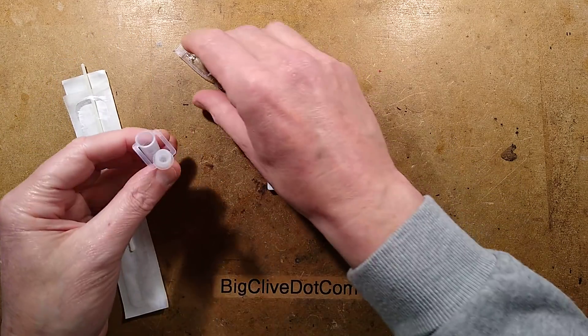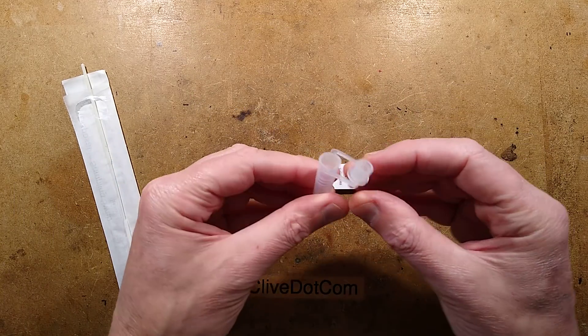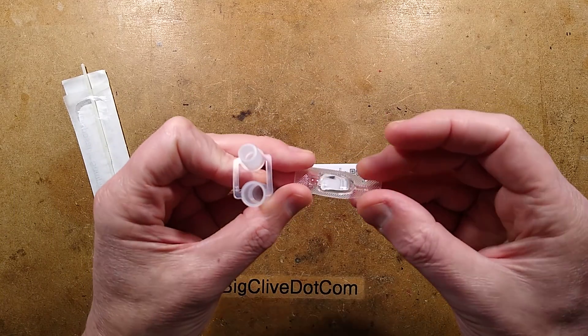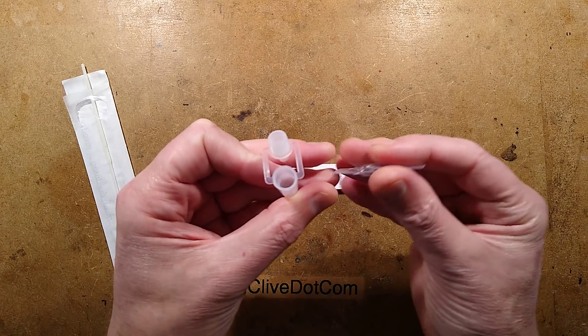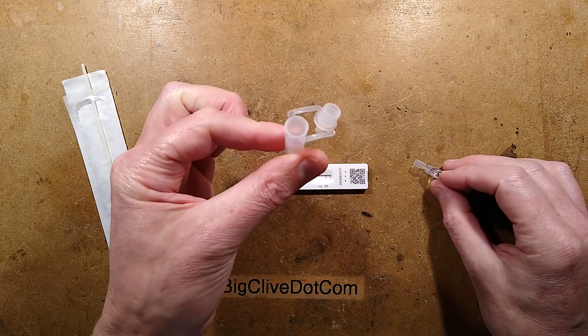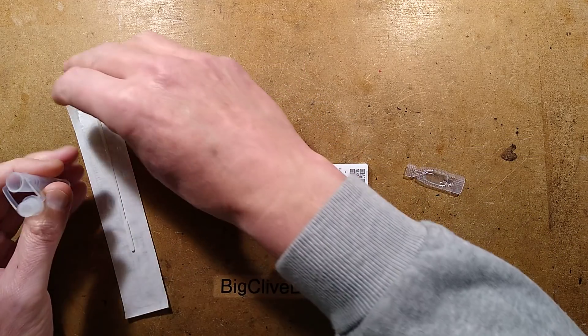So to do the test, you get these little dropper bottles and you get a carrier solution here. You snap this off and you pour the small quantity of carrier solution into this bottle.